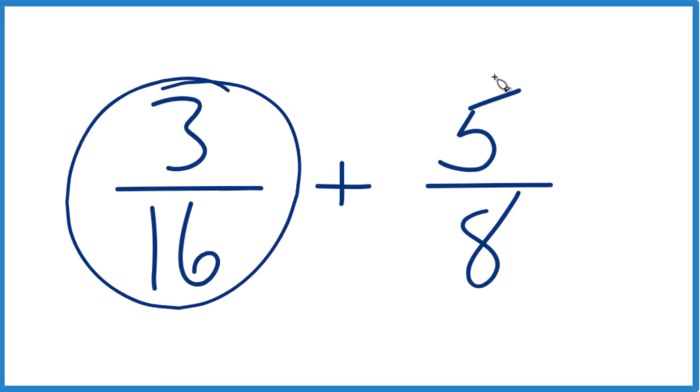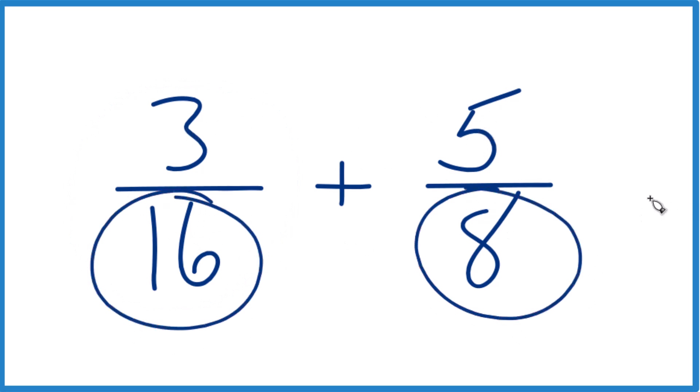If you need to add 3 sixteenths plus 5 eighths, here's how you do it. The key is we need to get the denominators to be the same, then we can just add the numerators.